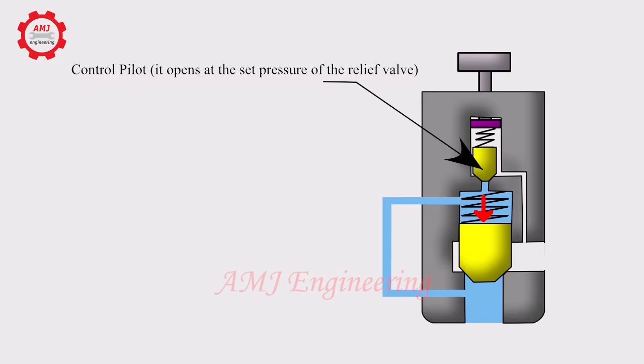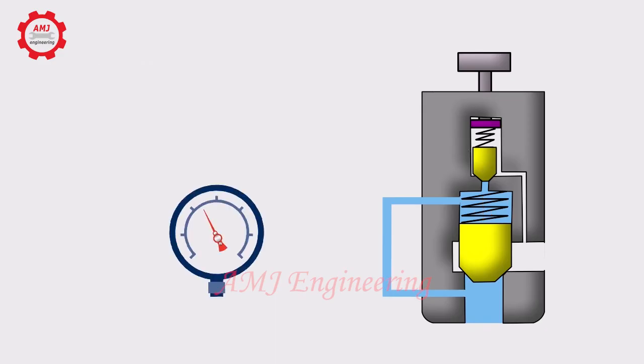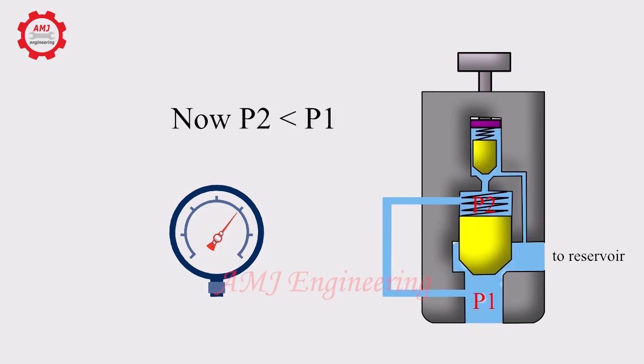The pressure at which the control pilot relieves is the functional set pressure of the relief valve. When the pilot valve reaches set pressure it opens and releases the pressure from the dome. The piston is then free to open and the main valve exhausts the system fluid.